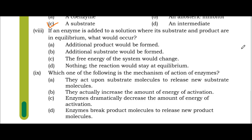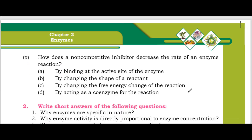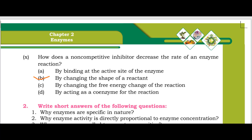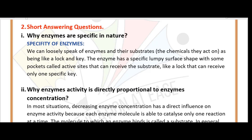If an enzyme is added to a solution where its substrate and product are in equilibrium, the free energy of the system would not change. Which one of the following is the mechanism of action of an enzyme? They act upon substrate molecules to release new substrate molecules. How does a non-competitive inhibitor decrease the rate of enzyme reaction? It does so by changing the shape of the enzyme, which decreases the rate of reaction.